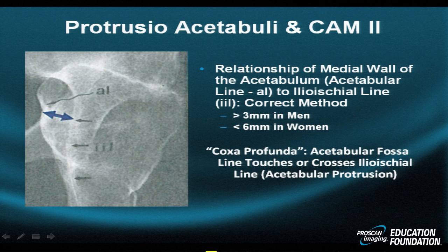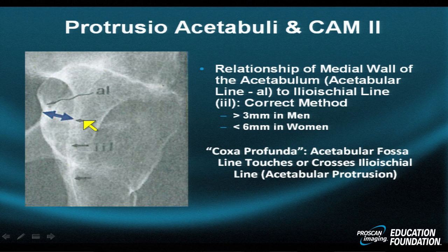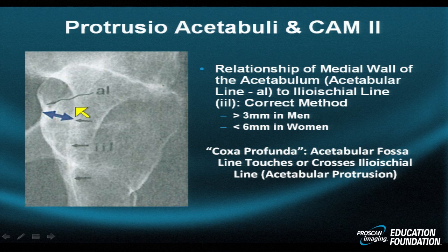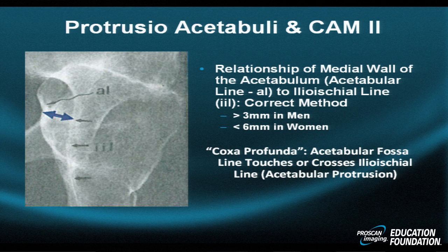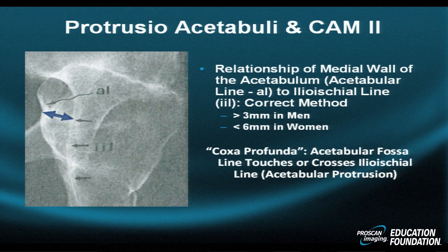Let's look at some key lines on a radiograph. We have labeled the acetabular line. This series of arrows from proximal to distal demonstrates the ilio-ischial line. The distance between the acetabular line and the ilio-ischial line should remain relatively constant — they should never cross one another. It should be greater than 3 millimeters in men and 6 millimeters or less in women. In the situation of coxia profunda, the acetabular line touches or crosses the ilio-ischial line, and acetabular protrusion may ensue.